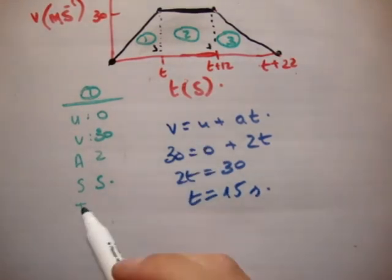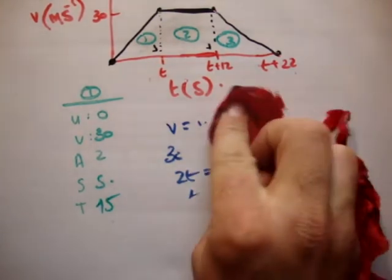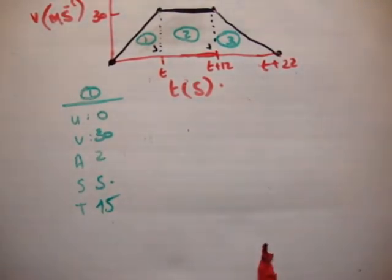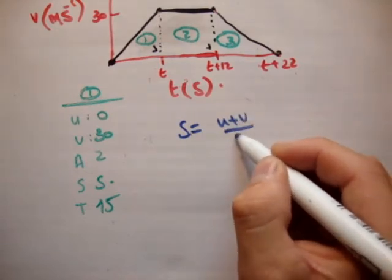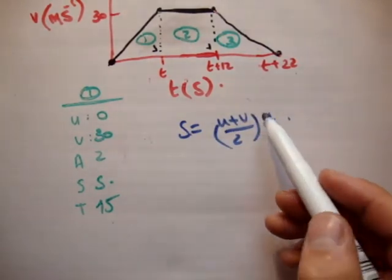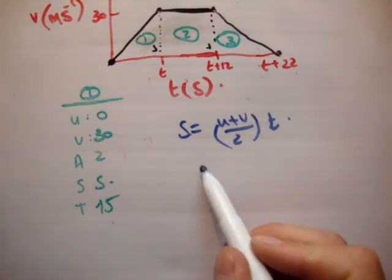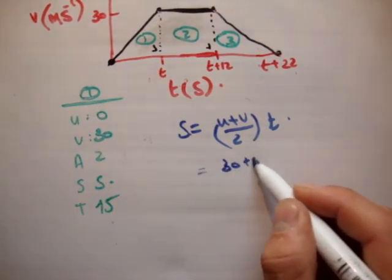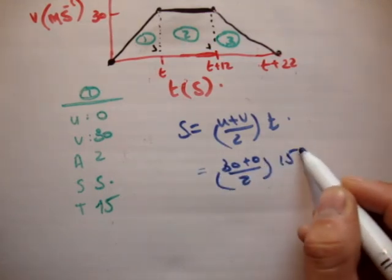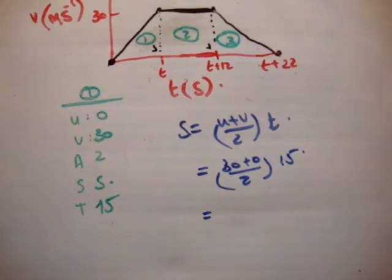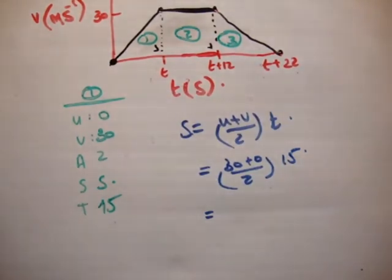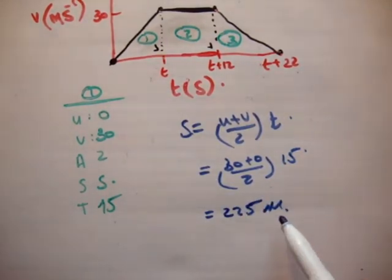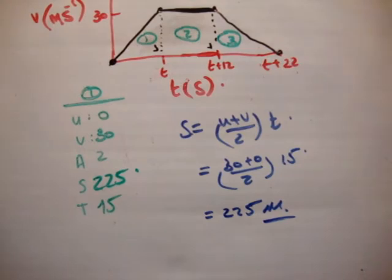So we say 30 equals 0 plus 2t. 2t equals 30, t equals 15 seconds. Alright, that's nothing new. So the next thing to do of course is to get the distance. So the one I usually use for this is s equals u plus v over 2 times the time. All these quantities are known so we can use that. So s equals 30 plus 0 over 2 times 15. So that's 15 squared. And to be honest, off the top of my head, I don't know that. 225 meters. It's a distance so its unit is meters, like that.